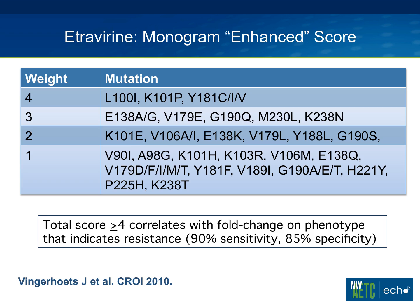These scoring systems don't account for certain NRTI mutations like TAMs and 184V that have been shown to slightly increase etravirine susceptibility, but we generally use these scores as a very good estimate of etravirine activity. For our patient with K103N, Y181I, and P225H: 181I scores 4, and 225H scores 1, giving a total of 5. Even though the genotype said 'possible resistance,' we would consider etravirine resistant and definitely not fully active.